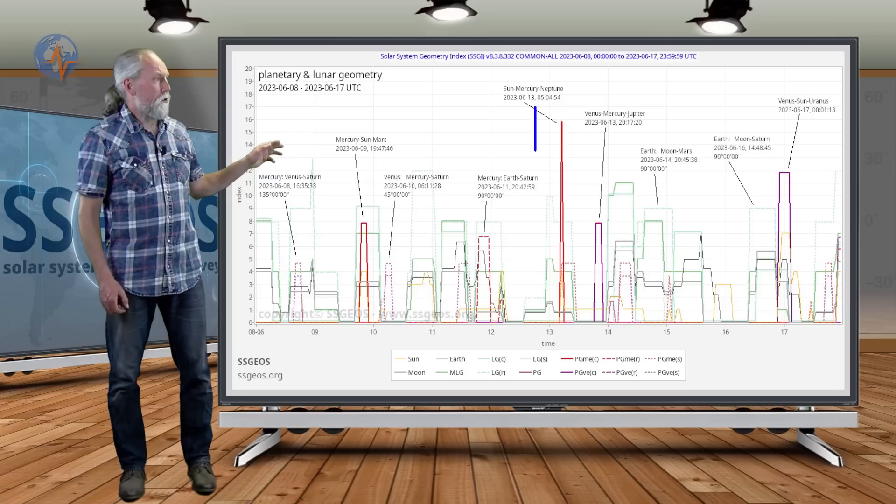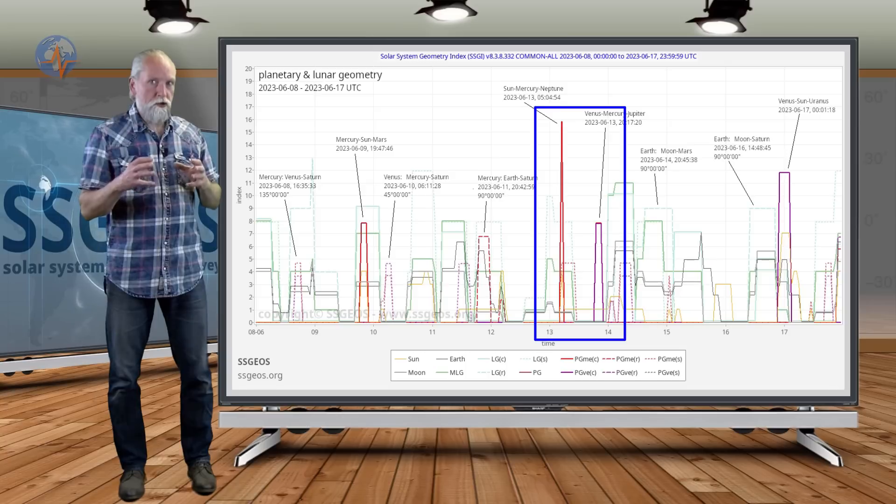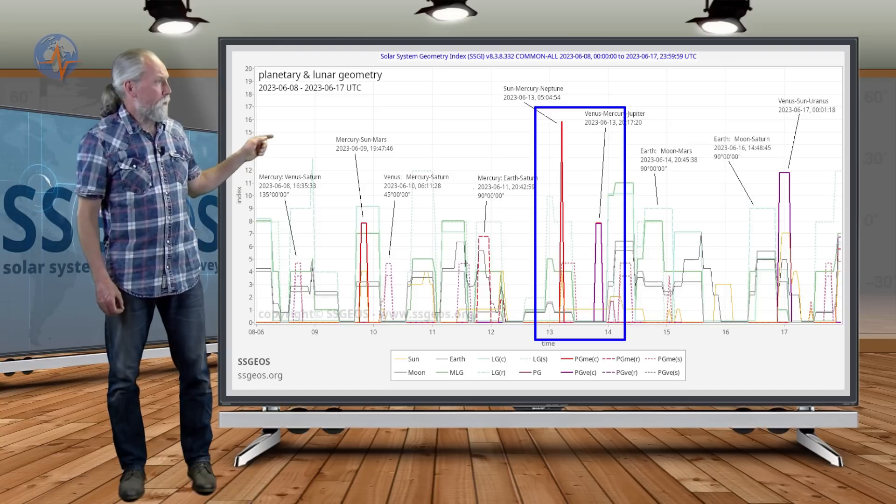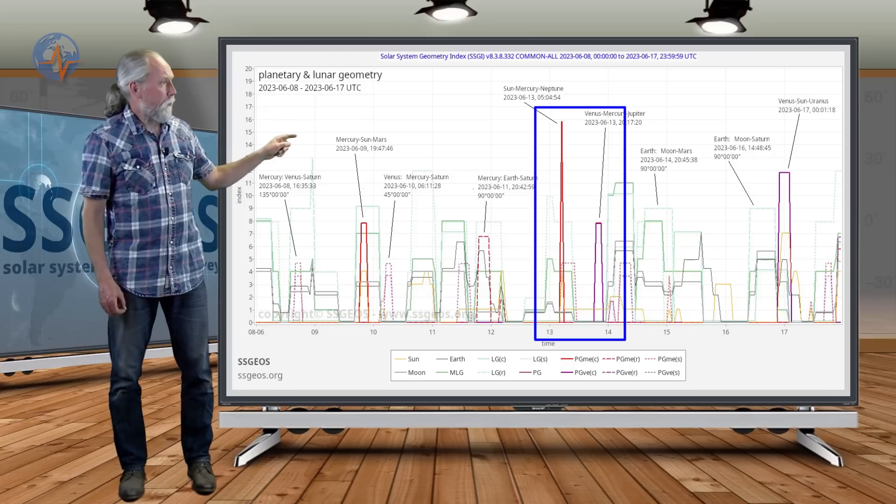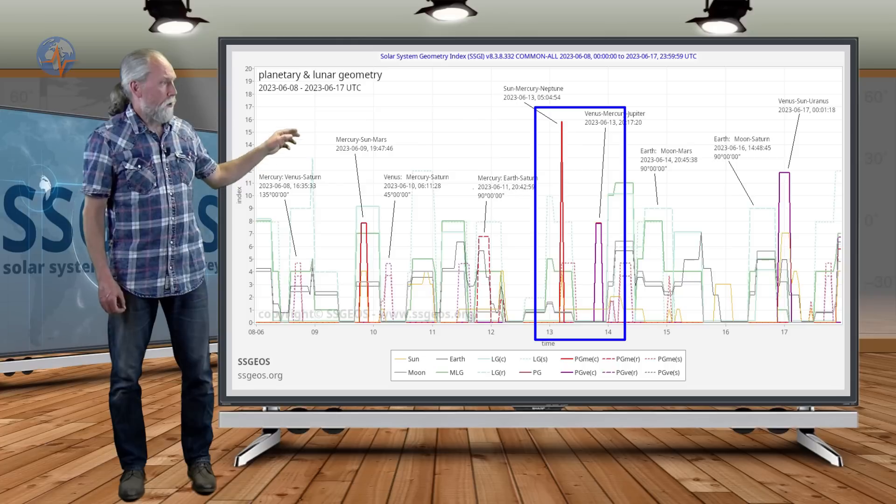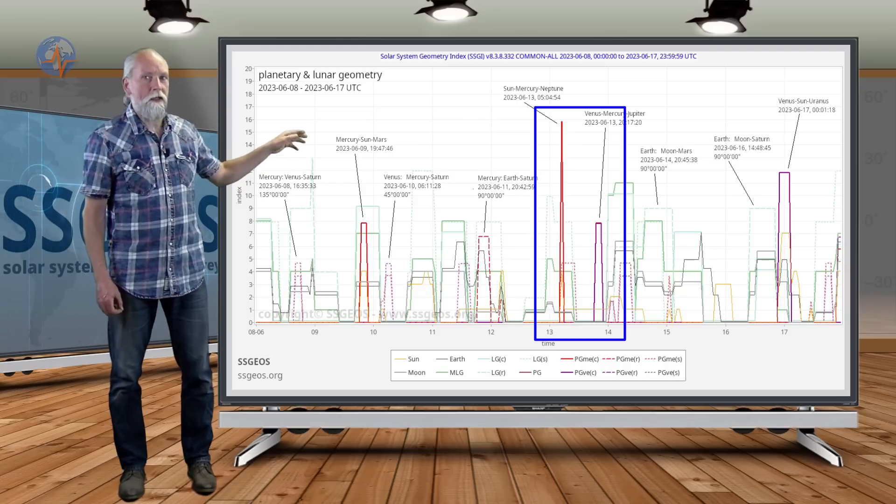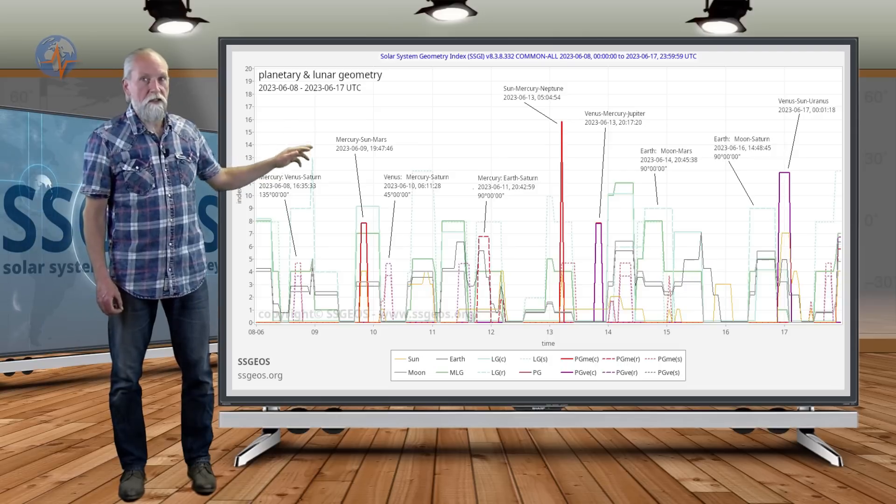On the 13th, a convergence of two planetary conjunctions. We are always keen on those convergences because they are critical. That will be Sun-Mercury-Neptune on the 13th, early on the 13th, followed by Venus-Mercury-Jupiter later on the 13th. We could see strong to major seismic activity following that convergence, which would most likely be about the 14th, 15th.